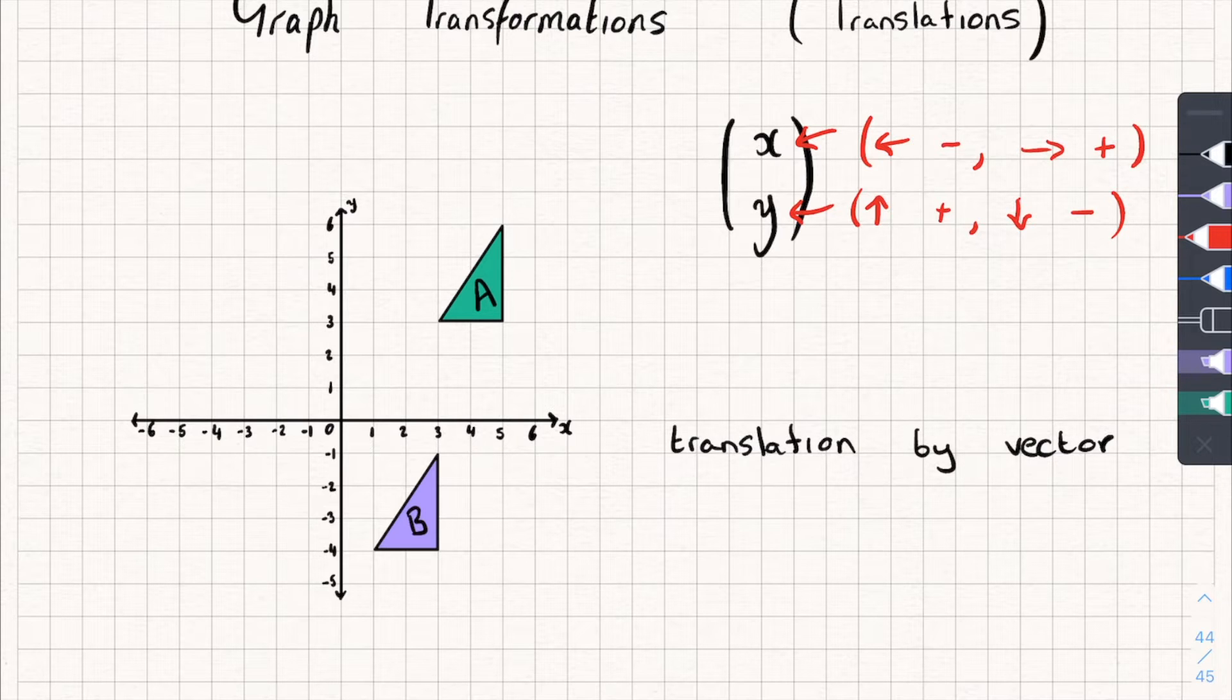Pick a point on the shape. So I'm going to pick a corner. Pick a corner on one of the shapes. And because we're going from A to B, I want to see how can I get to that same corner but on shape B. So remember, the first point of our vector, the first number, is how far left or right we've moved.